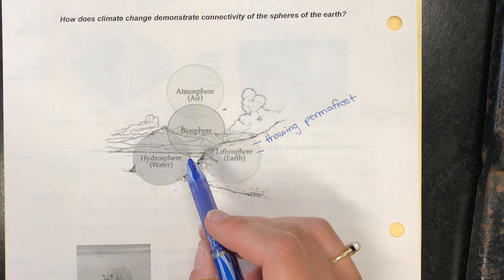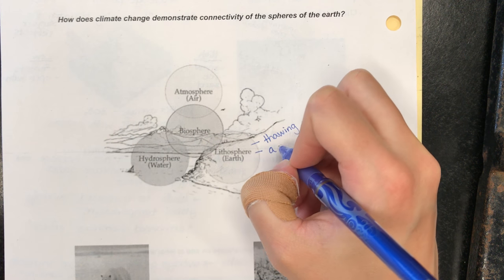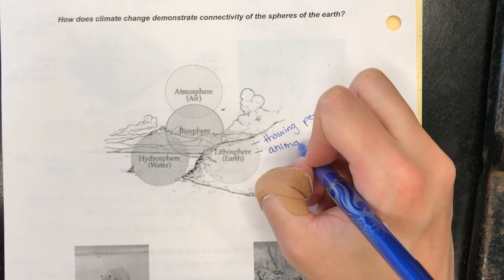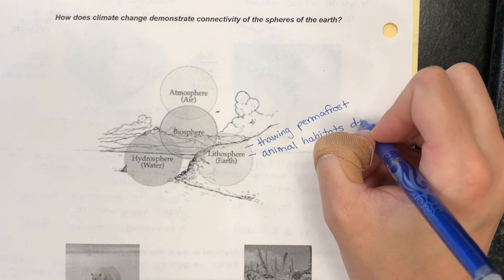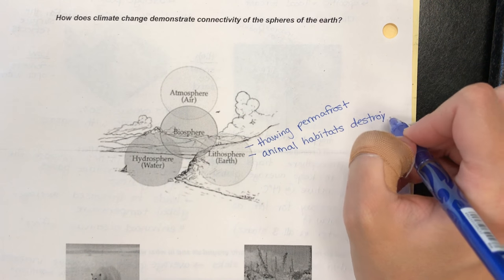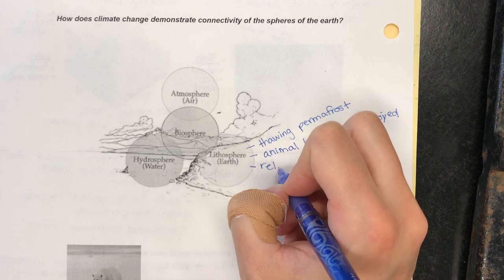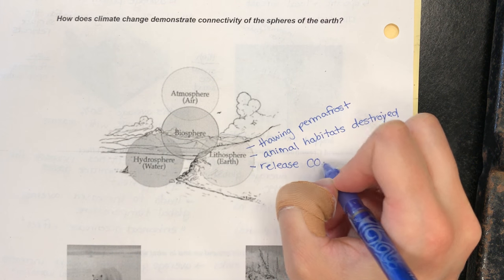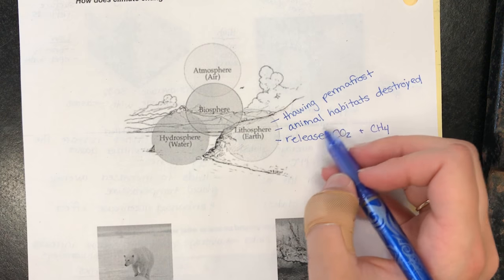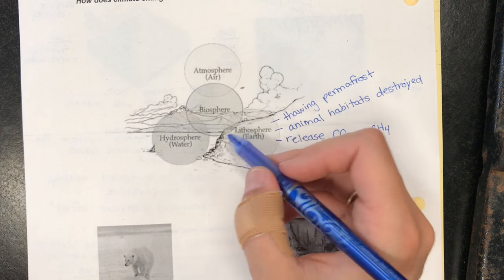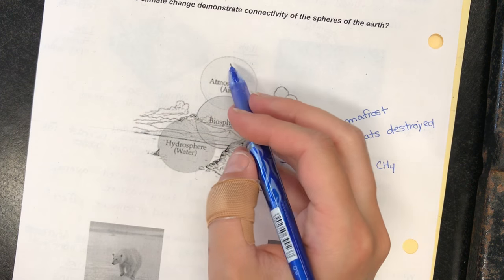We can also have animal habitats being destroyed through deforestation and things like that. The ground naturally releases carbon dioxide and methane from the bacteria that live in the ground. As permafrost melts and things like that we're increasing the global temperature. When the temperature increases that causes more wildfires, which adds more carbon dioxide.